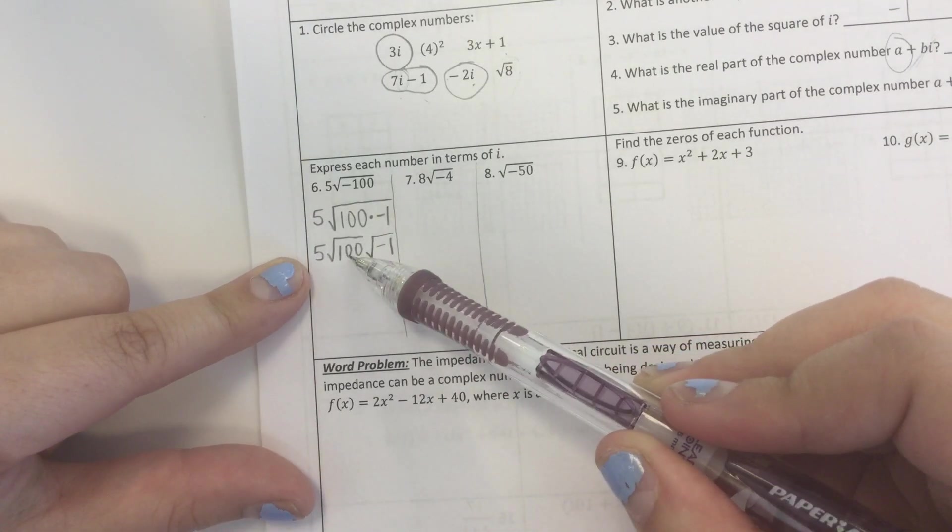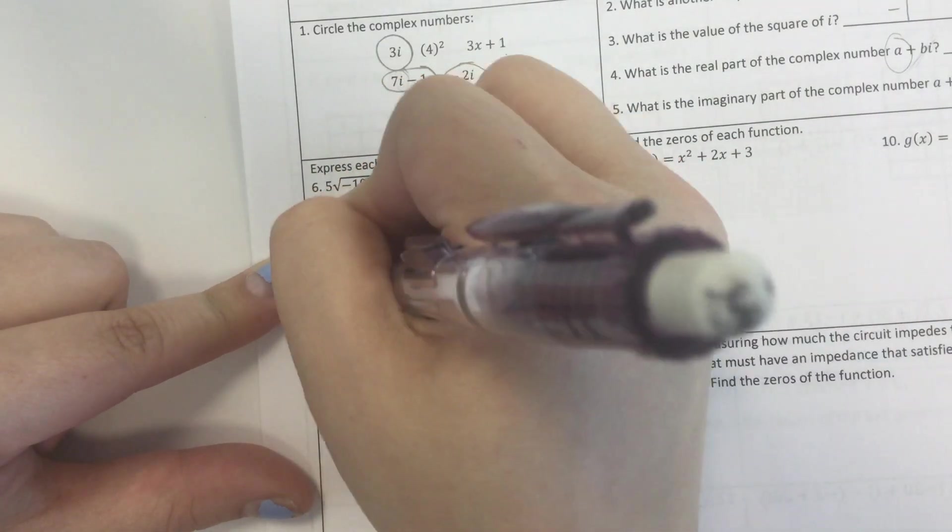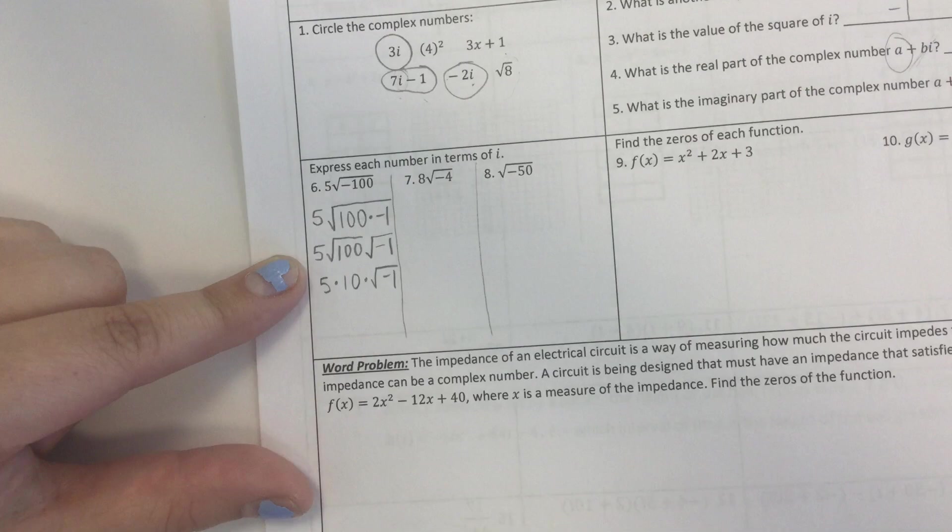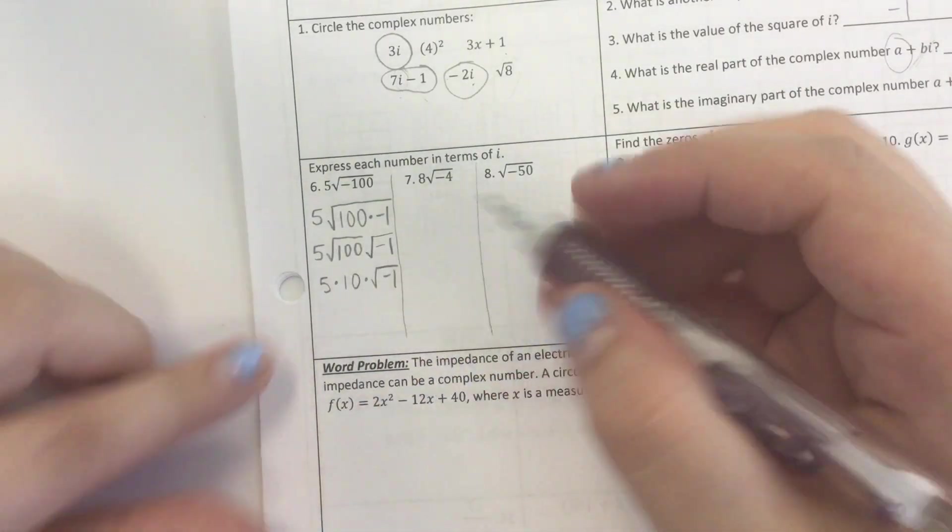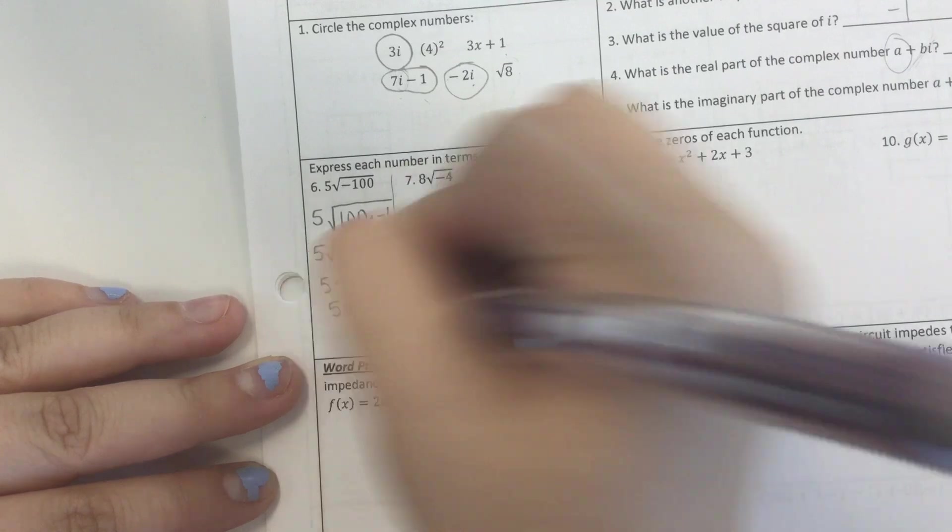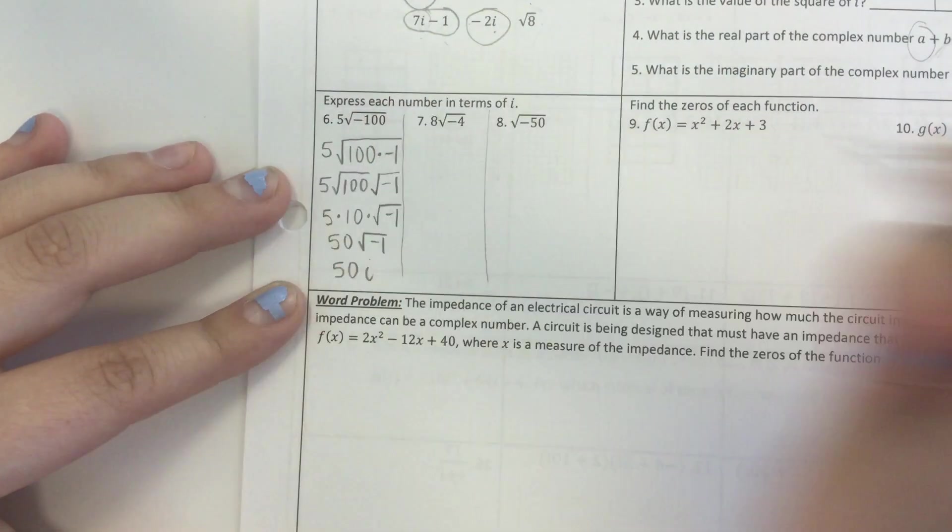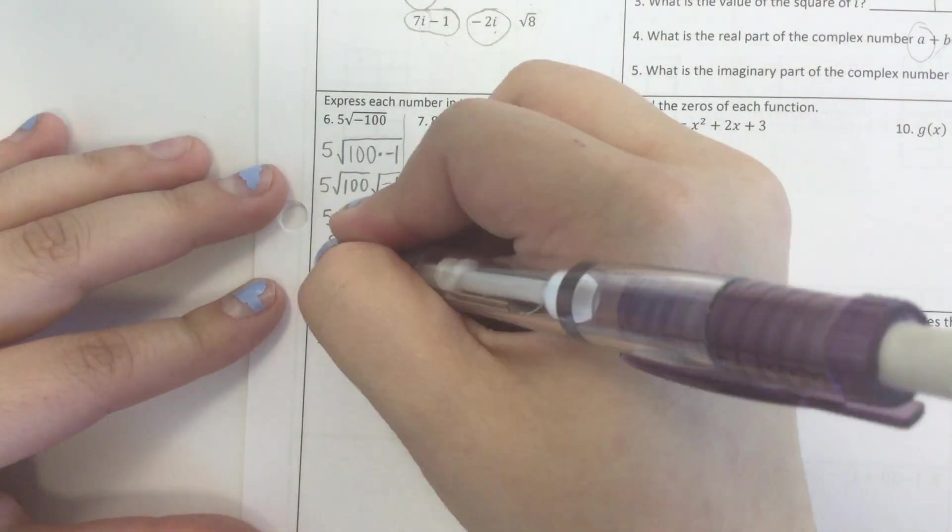Square root of 100 is 10. So really this is 5 times 10 times the square root of negative 1. Well, 5 times 10 is 50, square root of negative 1. And I know the square root of negative 1 is just i. So this now becomes 50i. And that's how you do that.